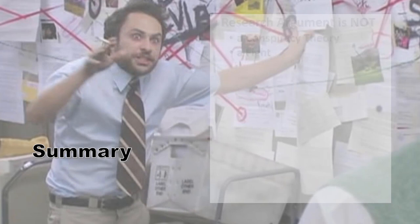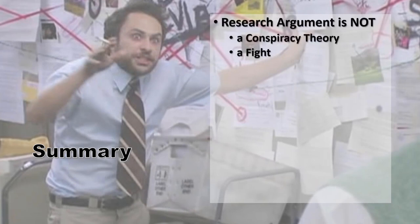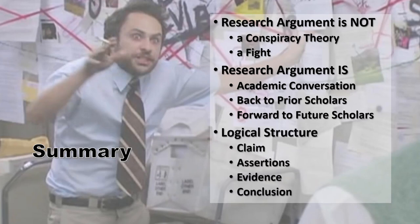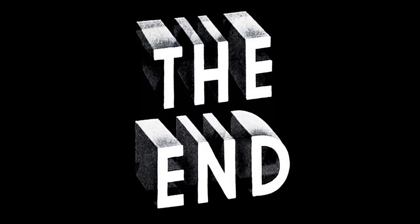So, let's summarize. A research argument is not a conspiracy theory or a fight you're trying to win. Rather, it's part of an academic conversation that harkens back to previous works by historians and other researchers, adds your own interpretation of the evidence, and provides your interpretation to future researchers. A research argument has a logical structure based on the claim you make, assertions that must be true for the claim to be true, and evidence that supports your assertions. You complete the argument with a conclusion that summarizes your argument and ties the assertions to the claim. This, then, ends the lecture. As always, thank you for your attention.